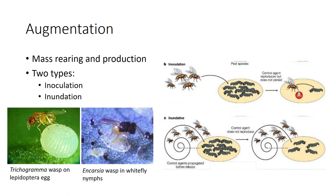Augmentation or periodic release may be achieved in one of two ways: inoculation or inundation. Inoculation involves the release of small numbers and may be made as infrequently as once a year in order to reestablish a species of natural enemies killed out periodically due to unfavorable environmental conditions. For example, Trichogramma and Encarsia wasps are mass-reared and released into greenhouses where their progeny provides season-long control.